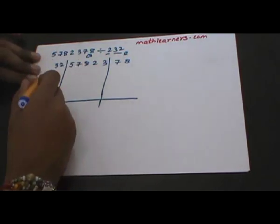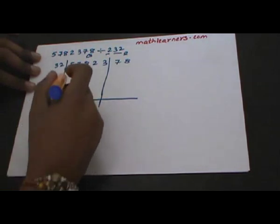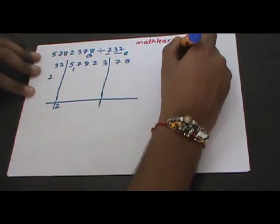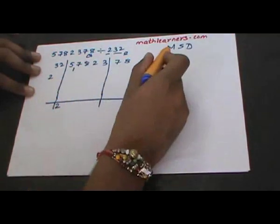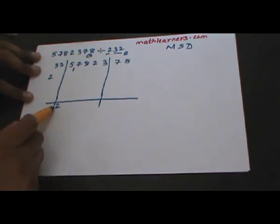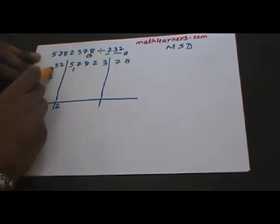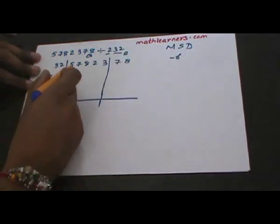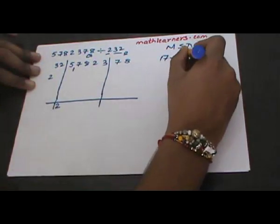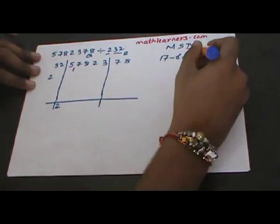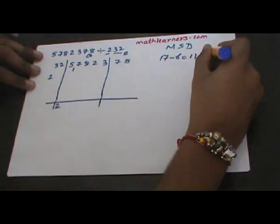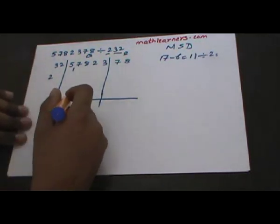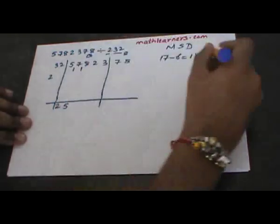The initial step remains the same: 5 will be divided by 2, giving quotient 2 and remainder 1. We carry out the MSD process. Since we have a two-digit flag, we multiply the quotient by the first digit of the flag. 2 multiplied by 3 gives 6, subtracted from 17 gives 11. 11 divided by 2 gives quotient 5 and remainder 1.